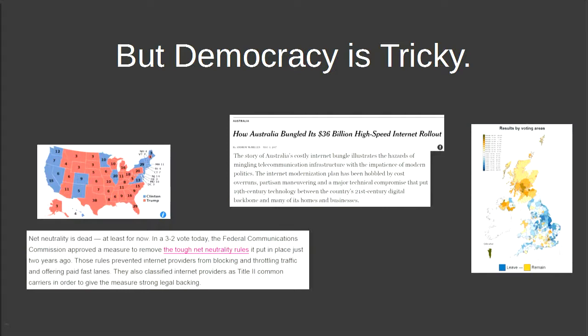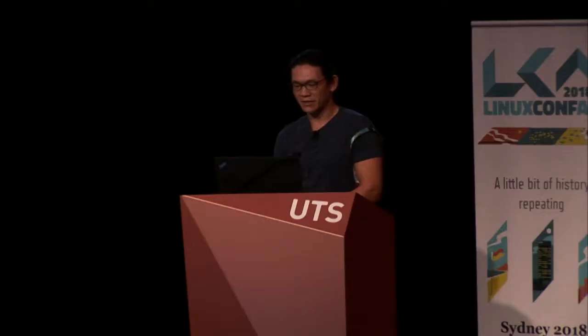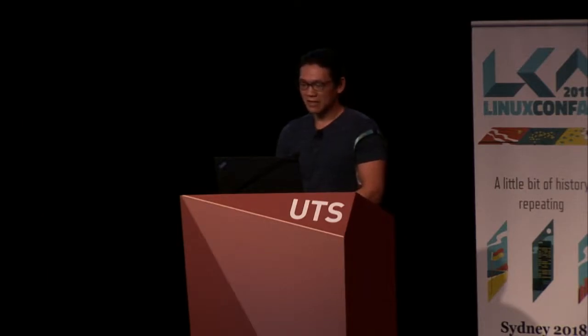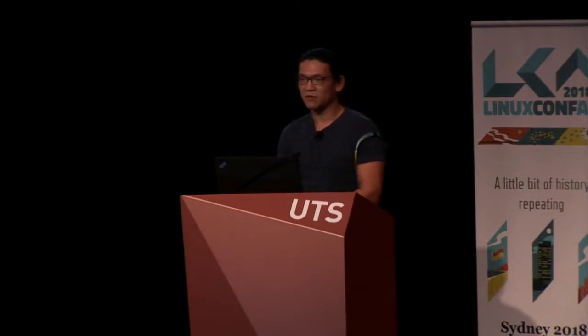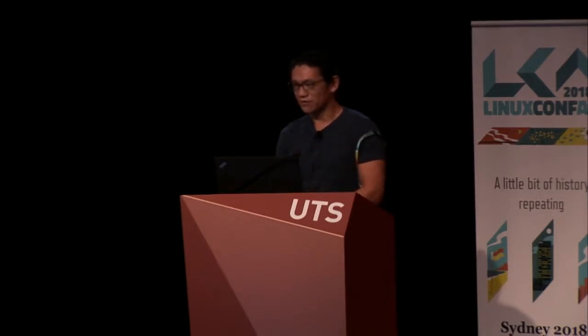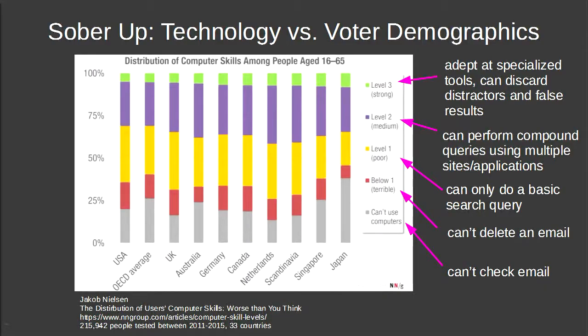There have been stories about the Australian high-speed internet rollout driven by politicians, Brexit, the US election — so you can't assume preposterous proposals would never pass a parliament or congress. The reason it gets scary is if you look at voter demographics versus technology literacy.